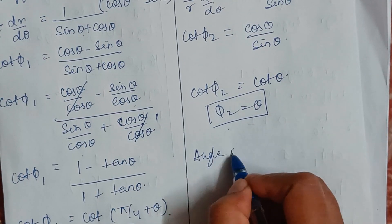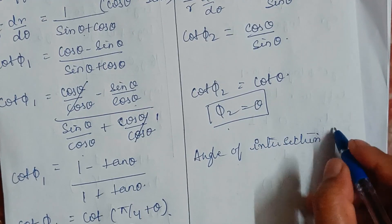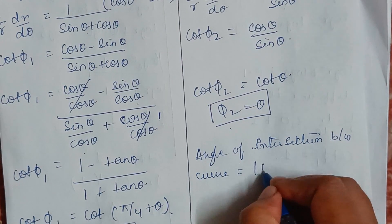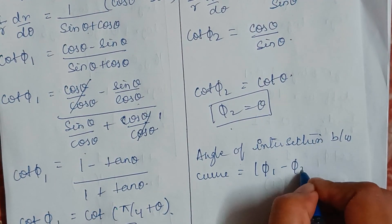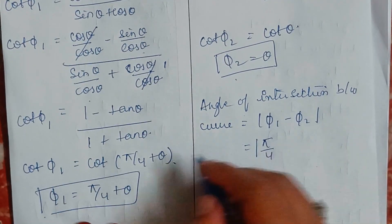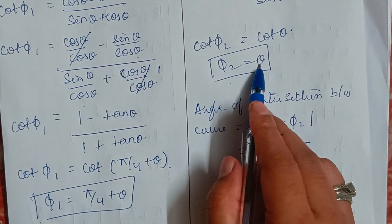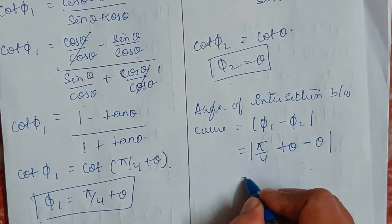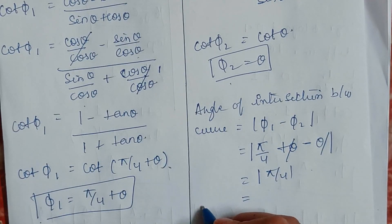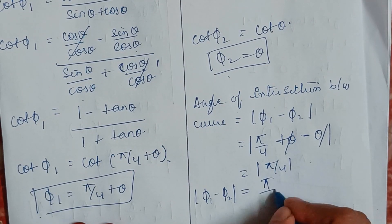The angle of intersection between the pair of curves is |φ₁ − φ₂|, which equals |π/4 + θ − θ|. The θ terms cancel, so the angle of intersection is π/4.